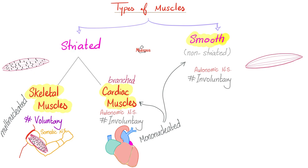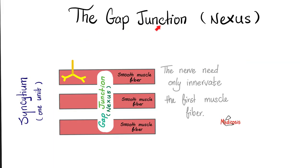Something unique that is absent in skeletal muscles is the gap junction, also known as Nexus. The gap junction spans the area between successive smooth or cardiac muscle fibers. Its purpose is to communicate all of these fibers together — as soon as a nerve fiber stimulates the first muscle fiber, the impulse is transmitted very quickly and those muscle fibers contract simultaneously as one singular muscle unit. This is called syncytium, and this is how both ventricles contract at the same time.